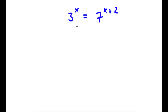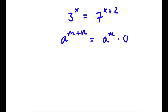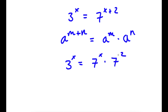In this problem, I have 3 to the power of x is equal to 7 to the power of x plus 2. To solve this, if I have something in the form a to the power of m plus n, this is equal to a to the power of m times a to the power of n. So in this case, 7 to the power of x plus 2, I can rewrite as 7 to the power of x times 7 to the power of 2.